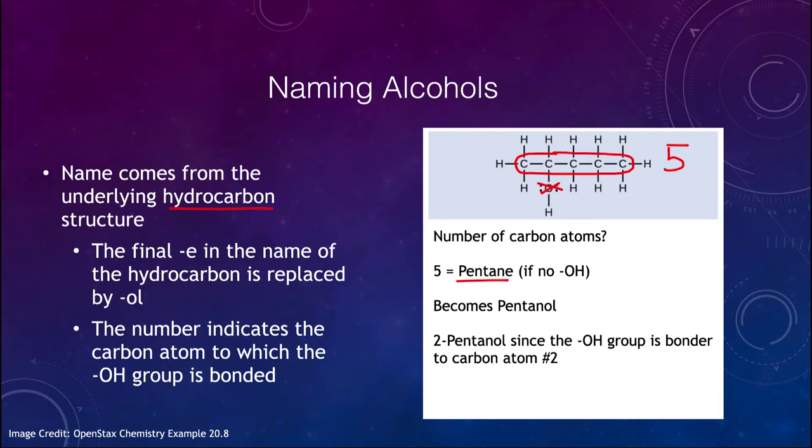However, we do have the oxygen atom, so let's look at what it becomes. What we do is we take the final E in the name of the hydrocarbon and replace it by OL. So the E goes away, we add OL, and that then becomes pentanol.